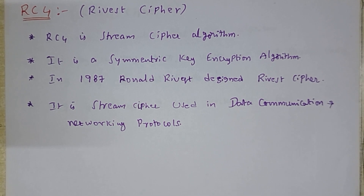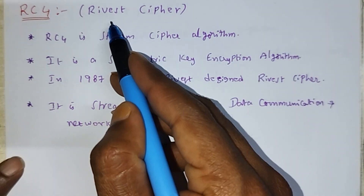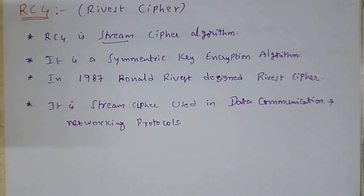What is RC4? RC4 stands for Rivest Cipher 4. It is a stream cipher. What is the meaning of stream cipher? Stream cipher is nothing but the plaintext is divided into a number of streams.